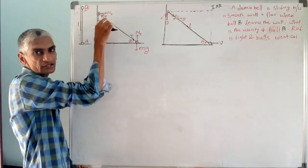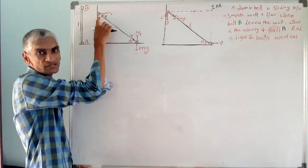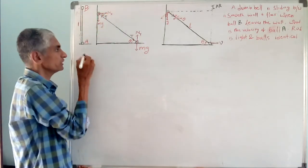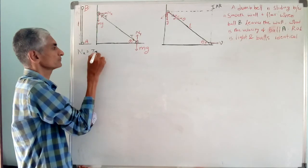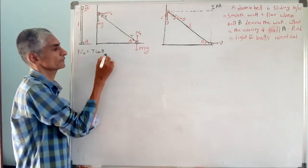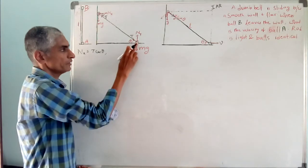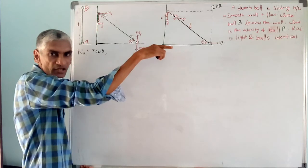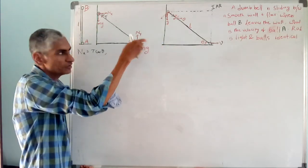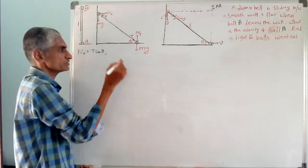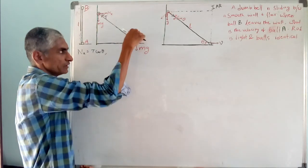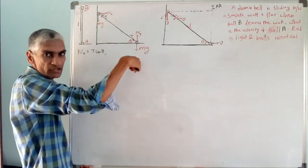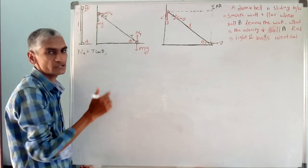In the horizontal direction for ball A, net force equals zero, so N_X equals T cos theta. For ball B, which is moving horizontally, its acceleration is horizontal, so net force in the vertical direction is zero. That means N_Y, the component of T in the downward direction, and Mg all balance each other.